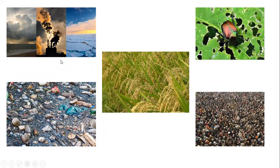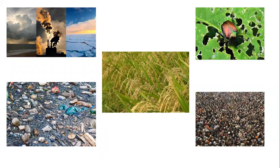There are several threats to crop cultivation. Changing climates due to pollution and global warming are the main threats, and the huge population is continuously helping to change the climate. Increasing population, increasing environmental change, and water pollution are responsible for the increase in crop pests and crop plant diseases. All these are additive threats, and we need to increase crop yield to feed this huge human population.